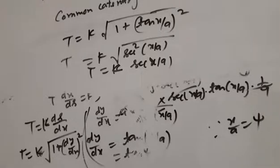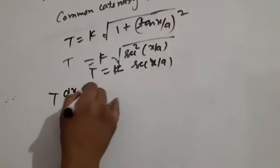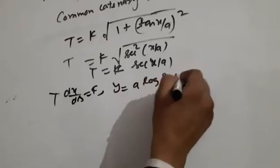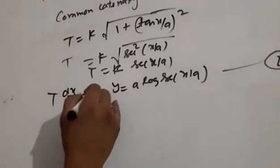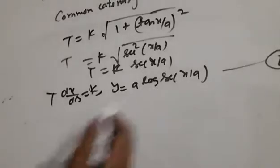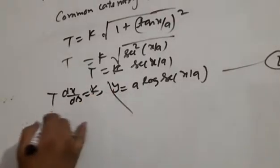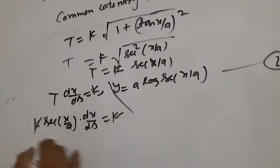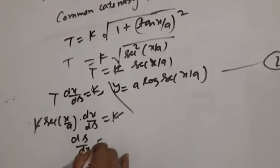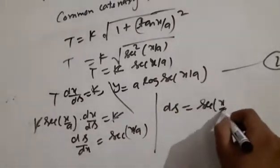From equation number one, T·ds/dx = k. Substituting y = a·log(sec(x/a)) and putting the value of t, we get ds/dx = sec(x/a). Therefore ds = sec(x/a)·dx.